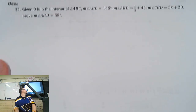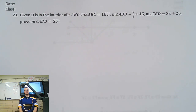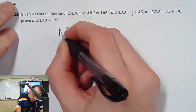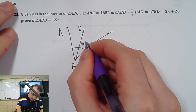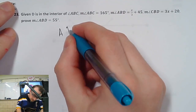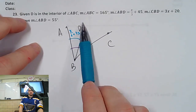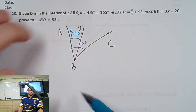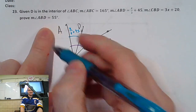Given D is in the interior of angle ABC, we use Angle Addition Postulate: angle ABD plus angle DBC equals angle ABC. We substitute in all their values by substitution, then use Addition Property, Subtraction Property, and Division Property to solve for x. Once we get x we plug it back in by substitution to find angle ABD — that's the step everyone forgets.